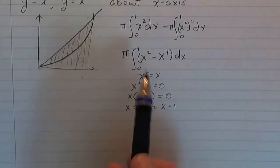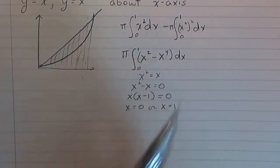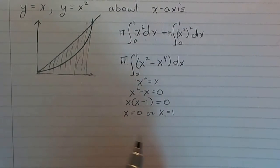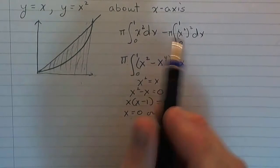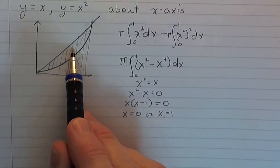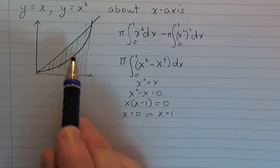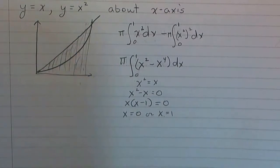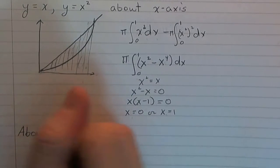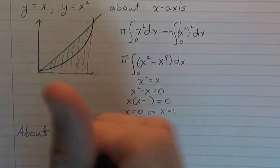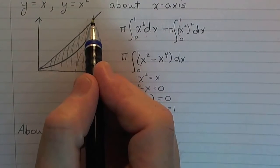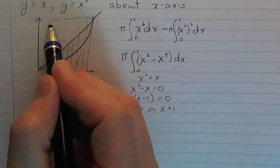Now let's change it a little bit. Instead of revolving around the x-axis, let's revolve this same region about the line y equals one. So now we want to revolve it around this line up here.